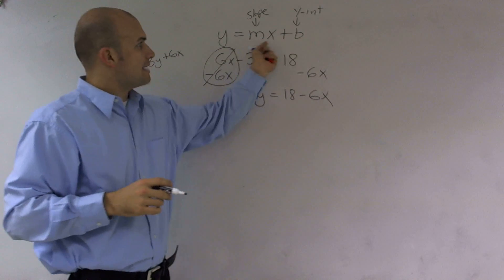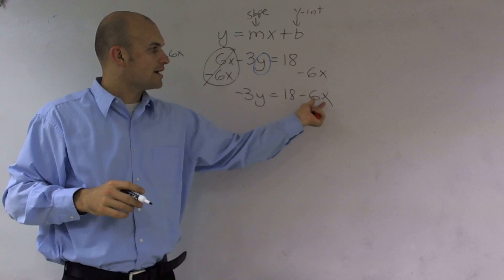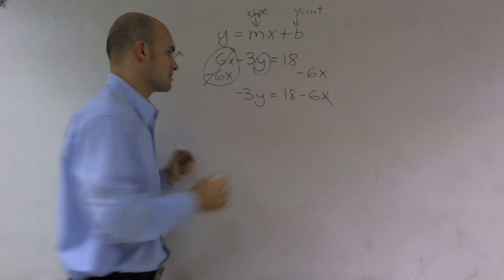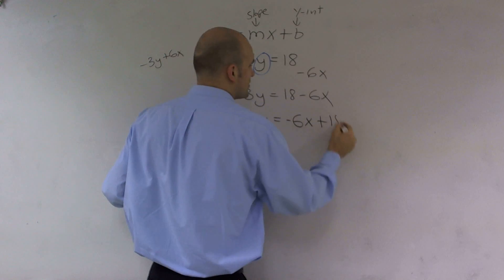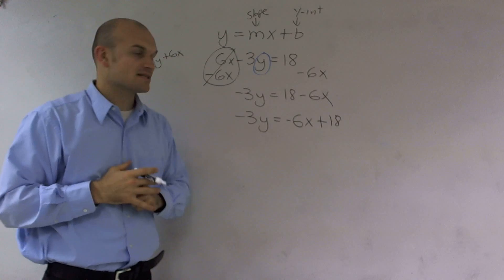Now, we want to write this in mx plus b format. Therefore, we want our x term to be in front of our constant. So I have a negative 3y equals negative 6x plus 18, since that's a positive 18.